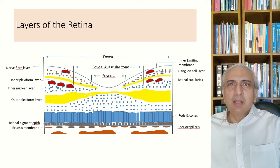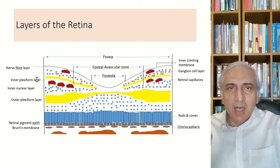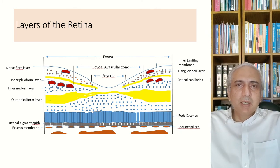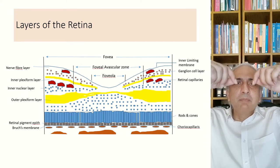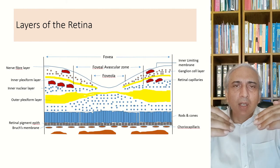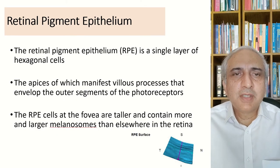The retinal capillaries synapse in the outer plexiform layer. Retinal blood vessels are present beneath the internal limiting membrane, entering and branching into arterioles and then capillaries in the deeper layers. The retina has a dual circulation: the inner two-thirds supplied by retinal capillaries and the outer one-third by the choriocapillaris.